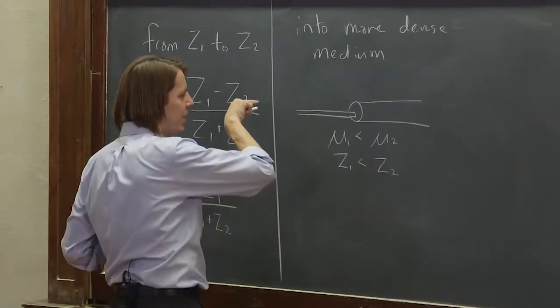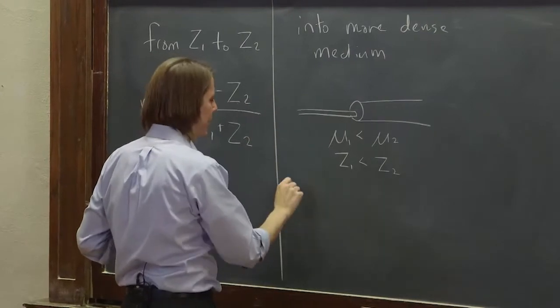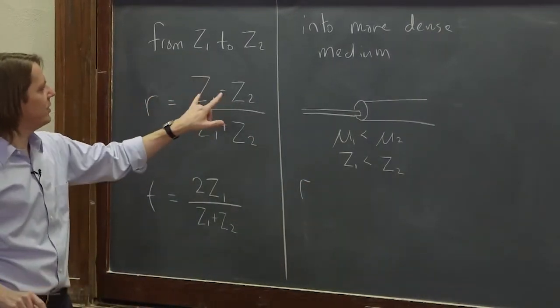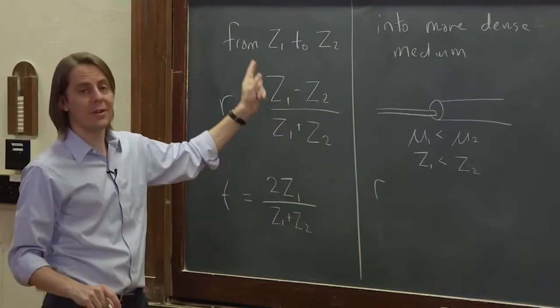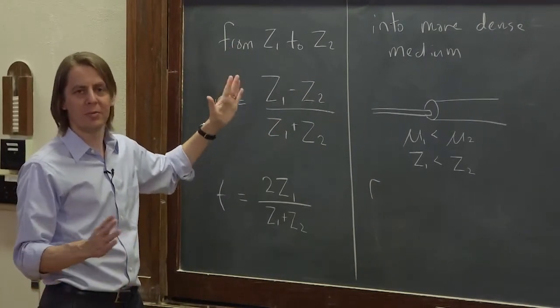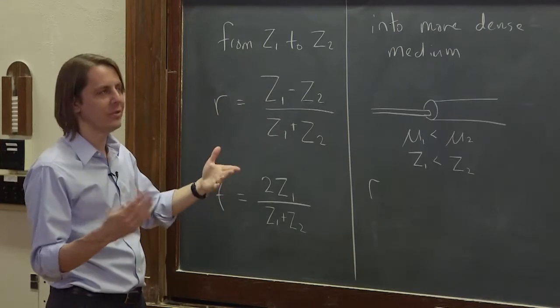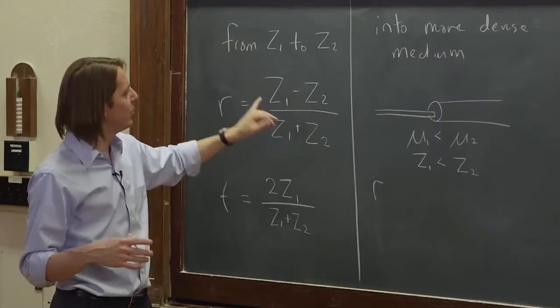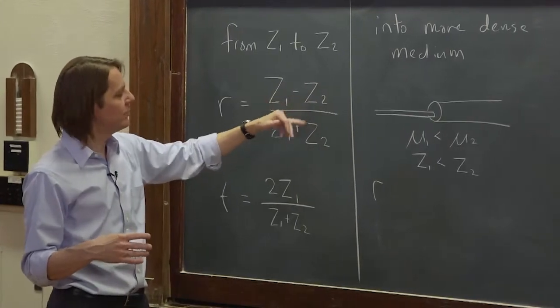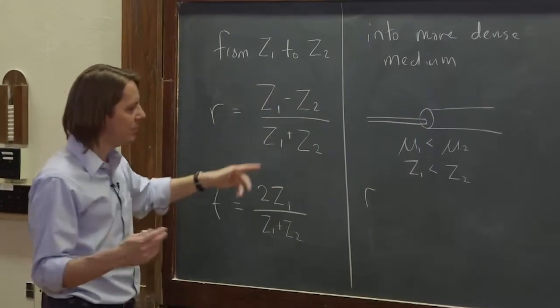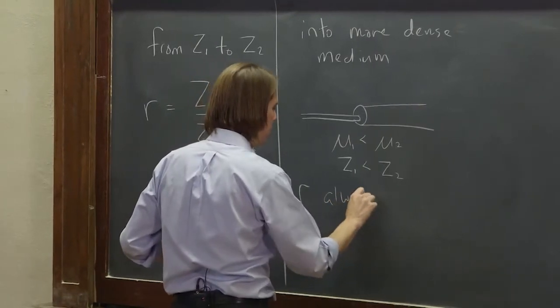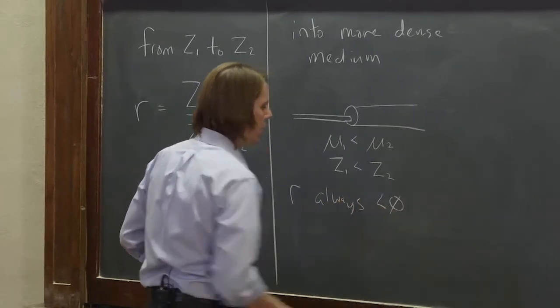So let's see what this means. For r, if we have a pulse coming in, we can ask what's going to happen. Well, if z1 is less than z2, that's always going to come out negative, because we assume impedances are always positive numbers. Tension is always positive, mass density is always positive. Square root keeps it positive. So if these are all positive numbers and 1 is less than 2, z1 is less than z2, then it's negative and that's going to be positive. So r is always going to be less than 0.